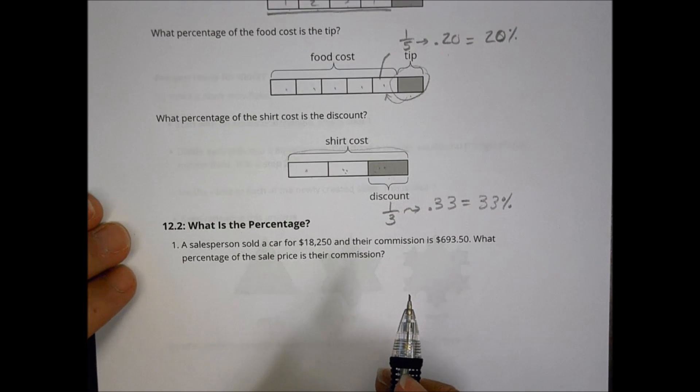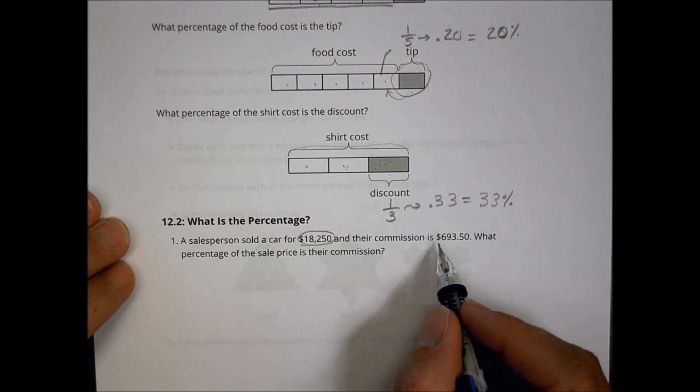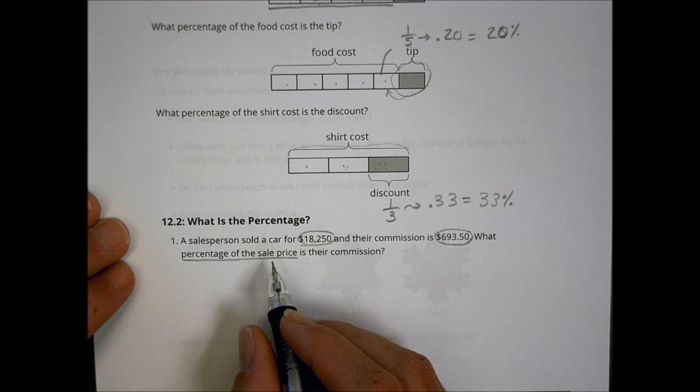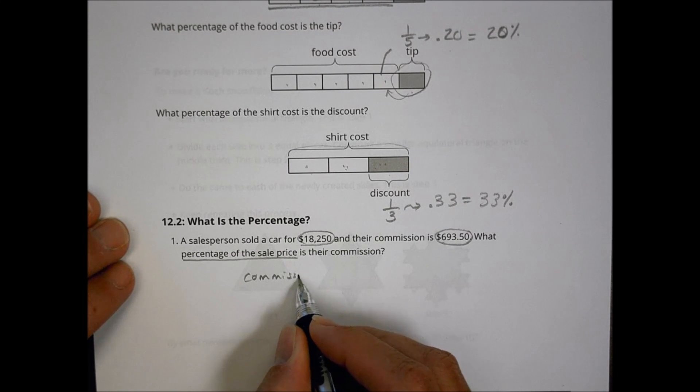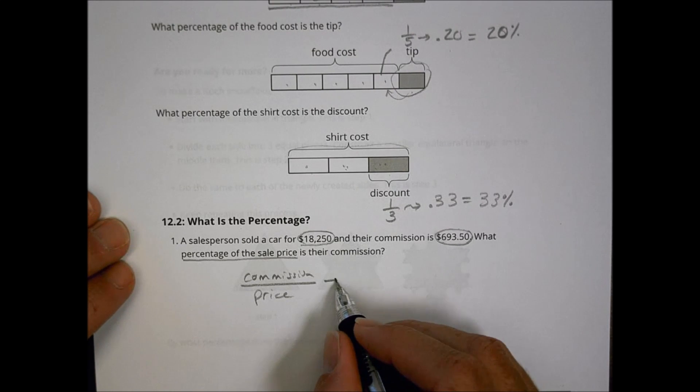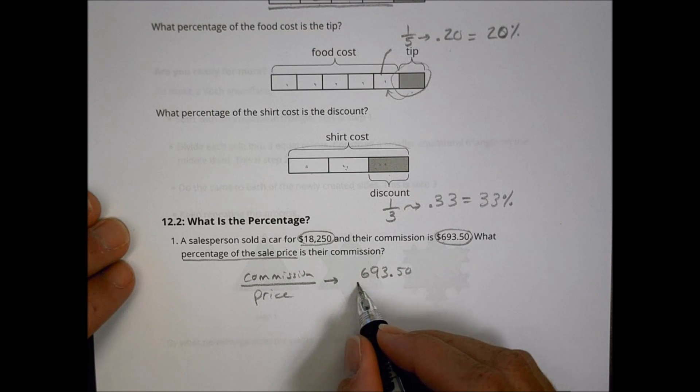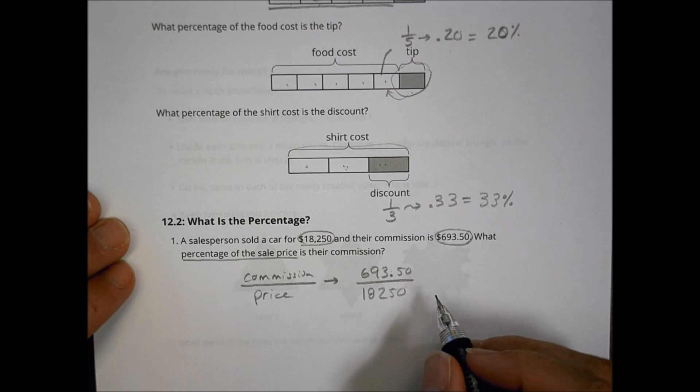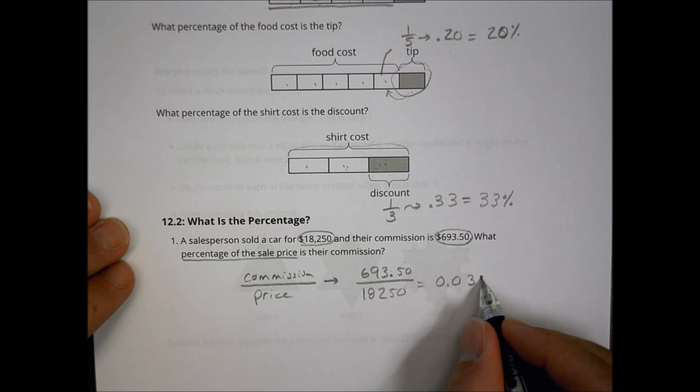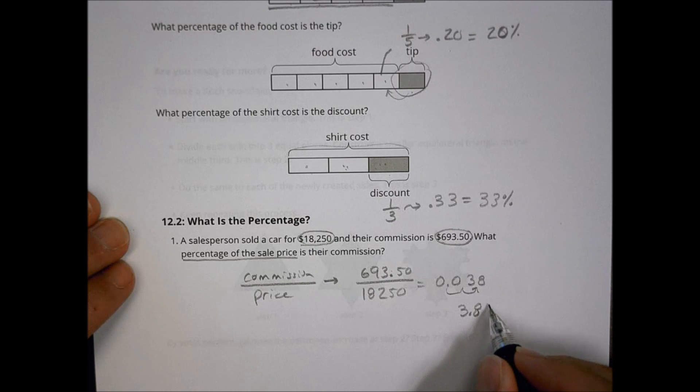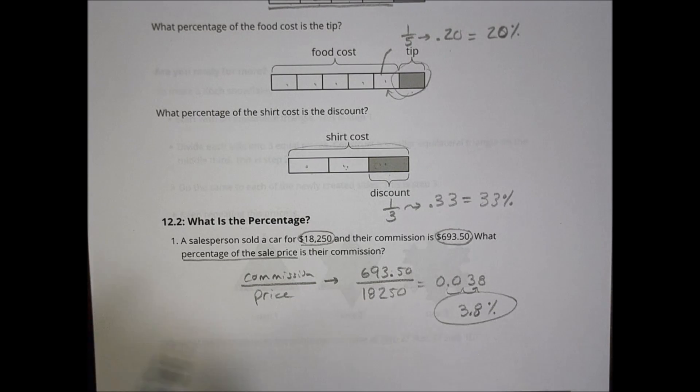So what is the percentage? A salesperson sold a car for $18,250, and their commission was $693.50. What percentage of the sale price is their commission? Well, to find that, what we want to do is we want to take their commission amount and divide that by the price of the car, the sales price. So in our case here, our commission was $693.50, and we want to know what part of that, or what percentage of that, was it out of $18,250. So $693.50 divided by $18,250 is going to be equal to .038. And when we convert that over to a percentage, we move it over two spots, and that becomes 3.8% as the solution there. So the commission for this guy is 3.8%.